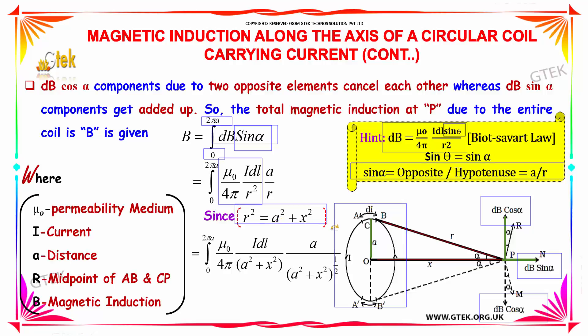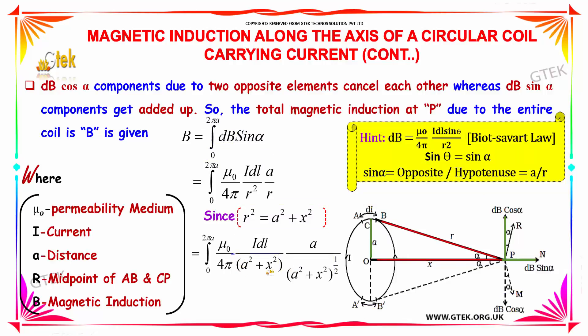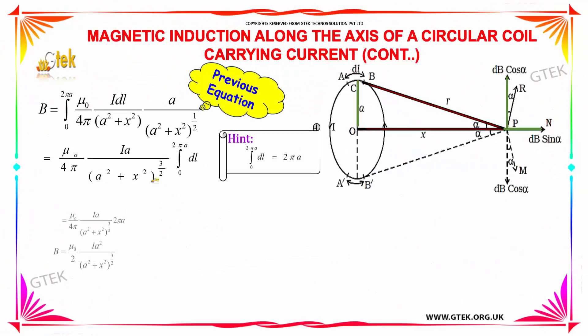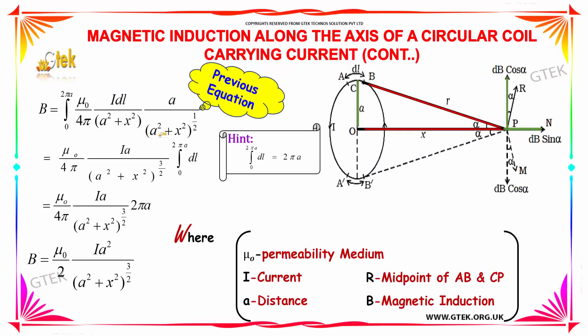As you know, R square is equal to A square plus x square. Substituting the values here, A square plus x square for R square, for R it's A square plus x square to the power 1 by 2. So it will become A square plus x square times A square plus x square to the half, which becomes A square plus x square power 3 by 2.